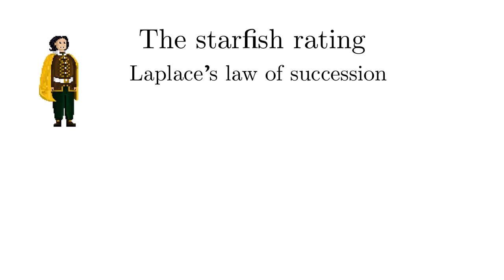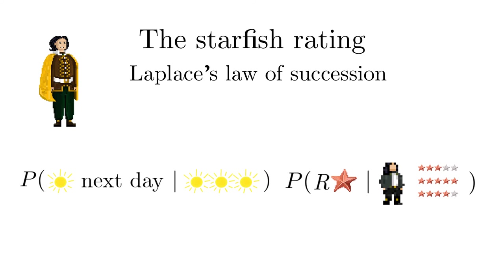The historical Laplace had asked himself how likely it was that the sun would rise again the next day, based on an estimated number of days it had risen before. This is nowadays called the Laplace Law of Succession. For the starfish rating, the corresponding question would be, what is the probability that the next vote will be R starfish, given the earlier votes? This is a nice exercise in Bayesian probability theory. Some details will be given in the supplementary material.